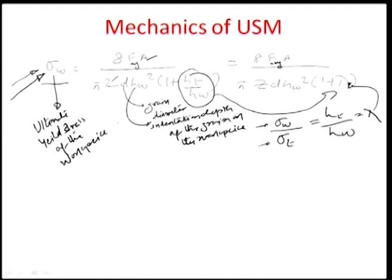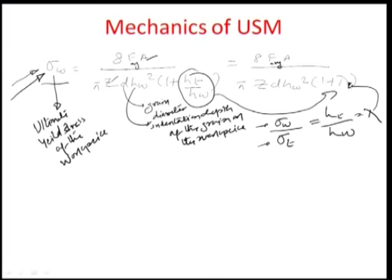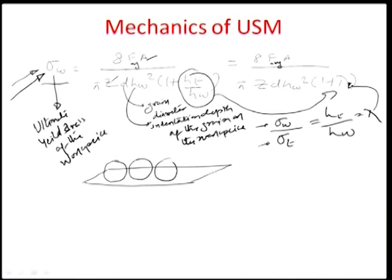Now, if we look at the Z value — the number of grains per impact in contact between the workpiece and the tool — we assume the number of grains acting is inversely proportional to the square of the diameter of each grain. This is obvious: if there is a given area with grains on it, the average diameter of the grain is D, and the occupation of grain area is a function of the overall area between the tool and workpiece.